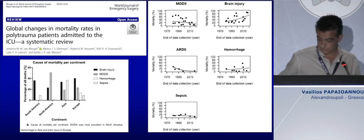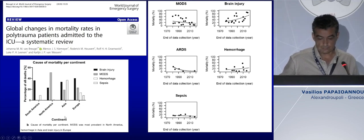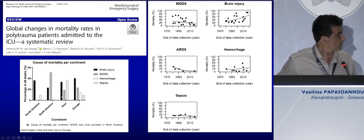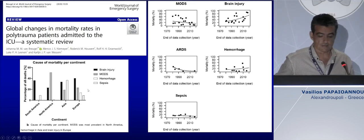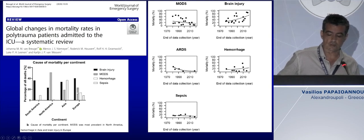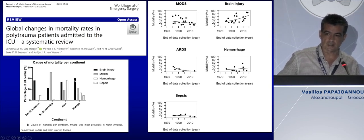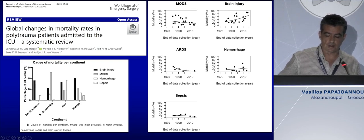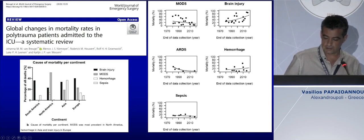You can also see this bar chart showing the distribution between different continents. In Europe, the major cause of death remains brain injury, in relation with MOF, hemorrhage, and sepsis. In Asia, hemorrhage is the major cause of death, whereas in North America it is actually MOF, not sepsis or hemorrhagic shock.